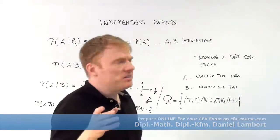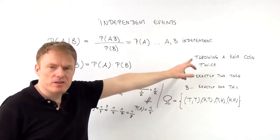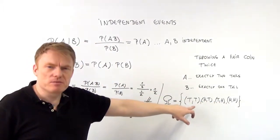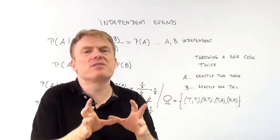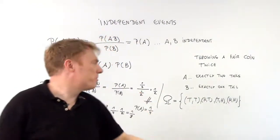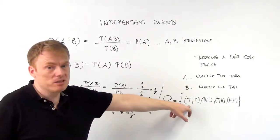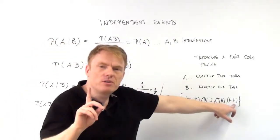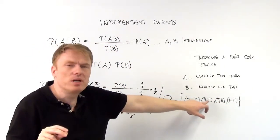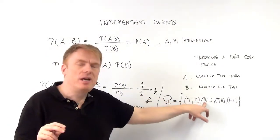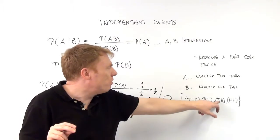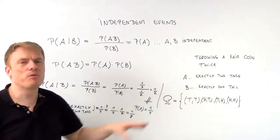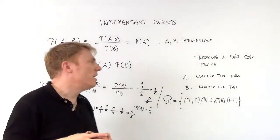Let's take a look at an example. We throw a fair coin twice. We have a set of elementary events — events that cannot be made any smaller. The four possible outcomes are: two tails, two heads, head then tail, or tail then head. That's a set with four possible elementary events.